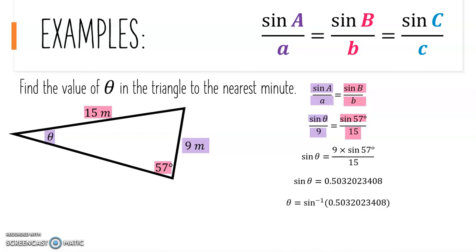However, we want an angle. So on our calculator, we press shift, sine, and then put the decimal in to get an angle. We also press the degrees-minutes-seconds button. We get 30 degrees, 12 minutes, 43.53 seconds.